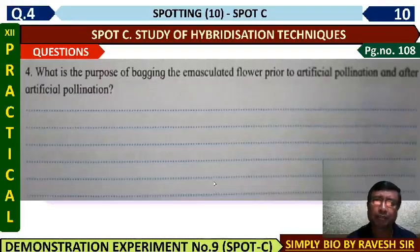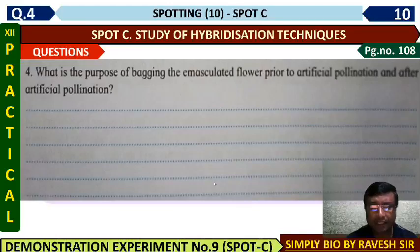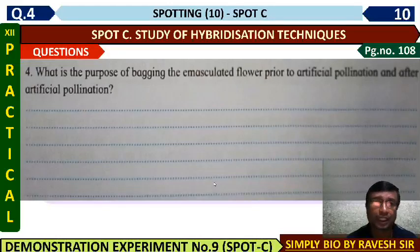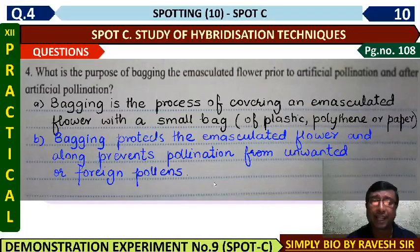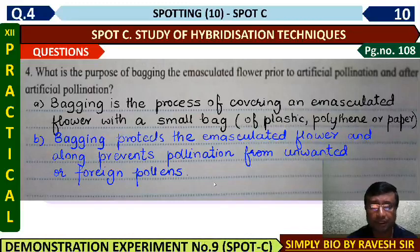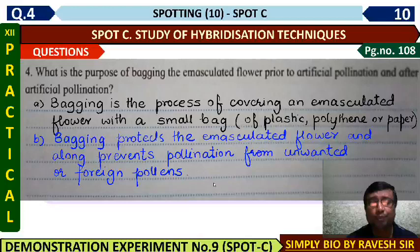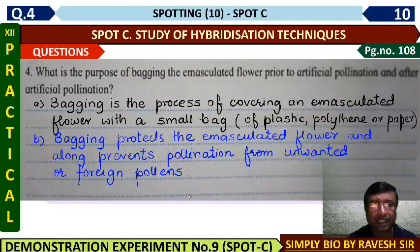What is the purpose of bagging? Bagging is done in artificial pollination — even after artificial pollination. Bagging is a process in which the emasculated flower is covered with a bag, which can be plastic or polythene paper. The paper should be perforated for air circulation. Bagging protects the emasculated flower from unwanted cross pollination.